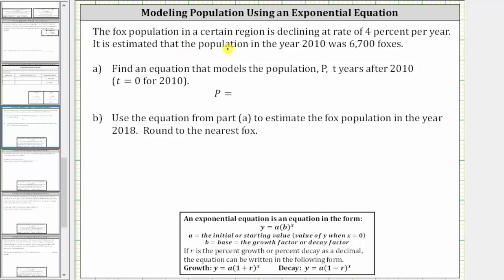The fox population in a certain region is declining at a rate of 4% per year. It is estimated that the population in the year 2010 was 6,700 foxes. Find an equation that models the population P, t years after 2010.